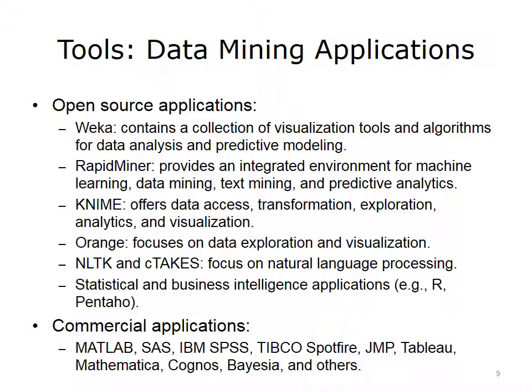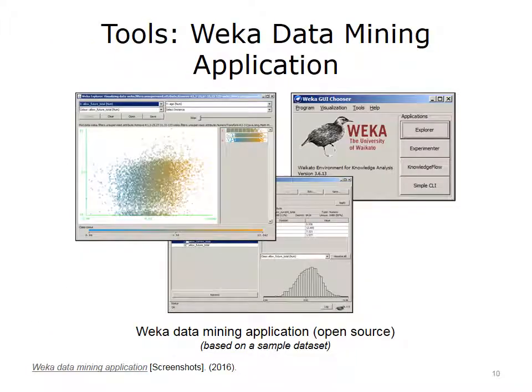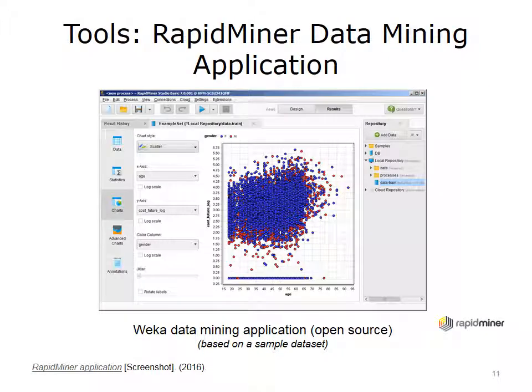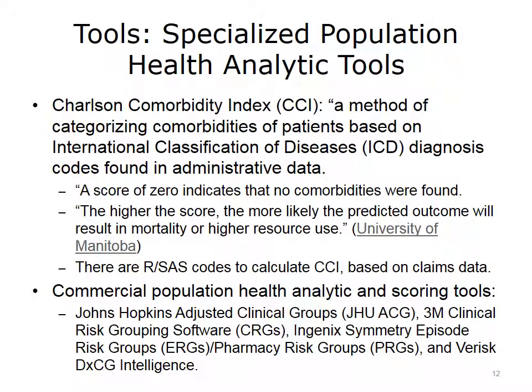Open-source data mining applications include Weka, RapidMiner, Orange, NLTK, and many others, including extensions to statistical packages such as R. Commercial applications include MATLAB, SAS, IBM SPSS, TIBCO, Spotfire, JMP, Tableau, Mathematica, Cognos, and others. This image depicts screenshots of the Weka data mining tool showing a scatterplot of age versus log-transformed future cost and a histogram of the log-transformed future cost. A screenshot of the RapidMiner data mining tool shows the scatterplot of age versus log-transformed future cost by gender.